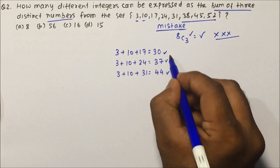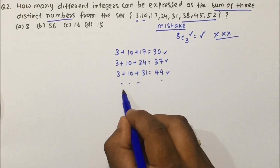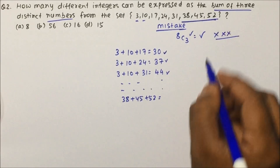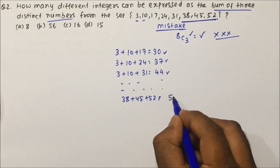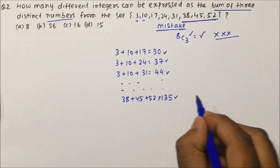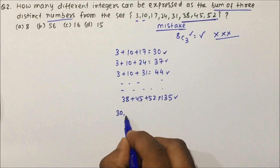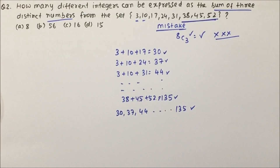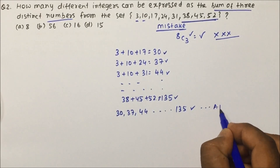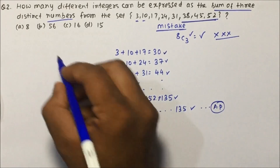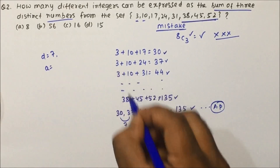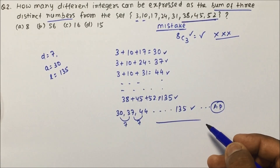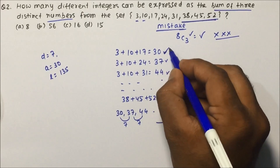The smallest sum starts at 30, then 37, then 44, and continues. The largest sum is 38 + 45 + 52 = 135. This sequence forms an arithmetic progression with first term 30, last term 135, and common difference 7. To find how many terms are in this AP, we use the formula: total numbers = (last term − first term) / common difference + 1.